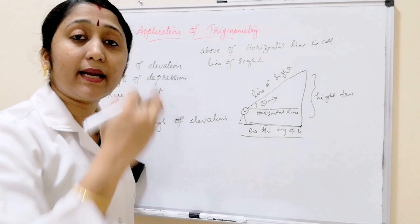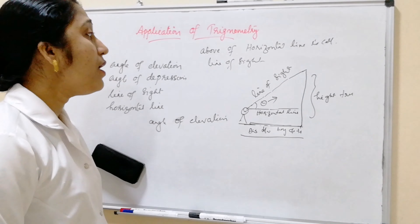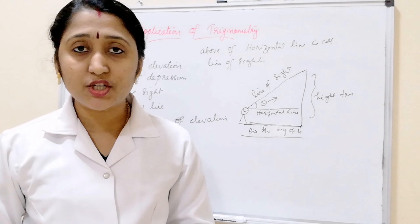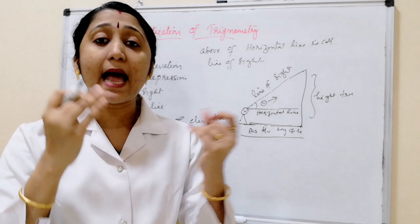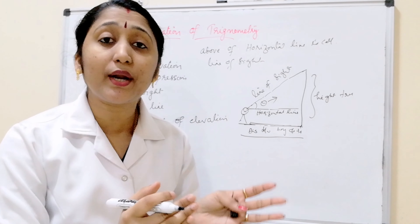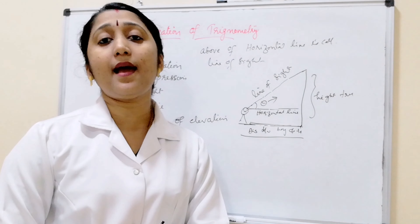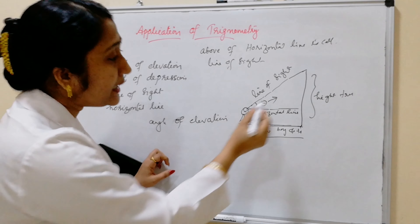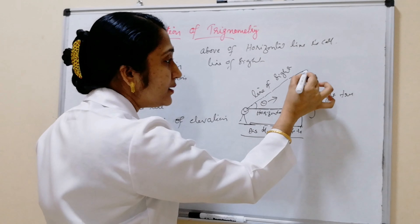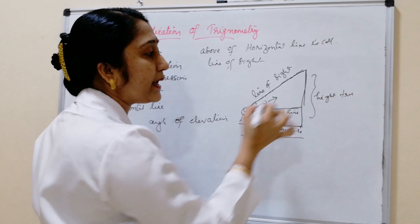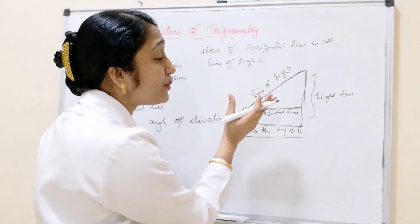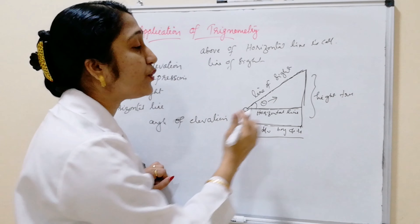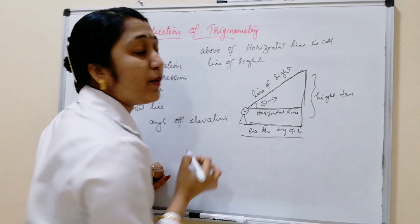So when you are looking up, that is called elevation. The angle of elevation is the angle between the horizontal line and the line of sight. This line of sight makes a right angle triangle, and that is why we can use trigonometric values to find the height of the tree or the distance between the boy and the tree.